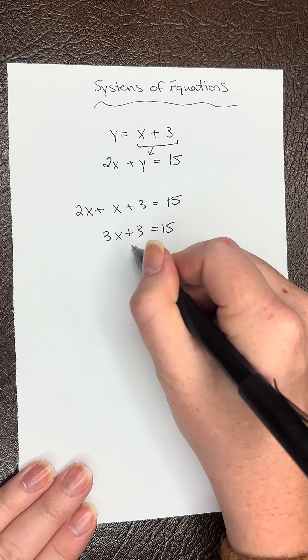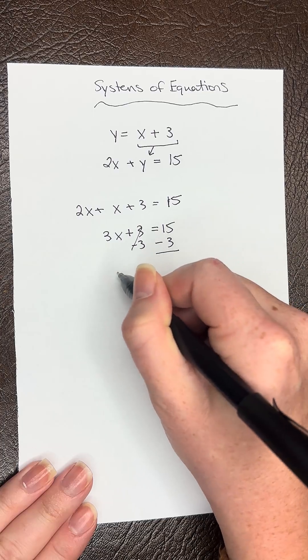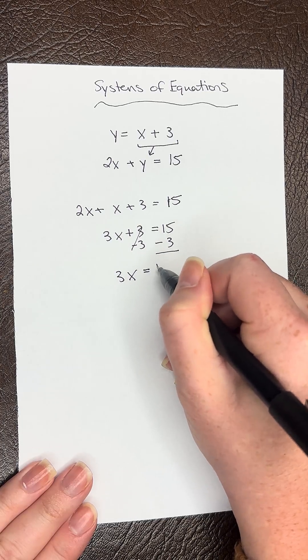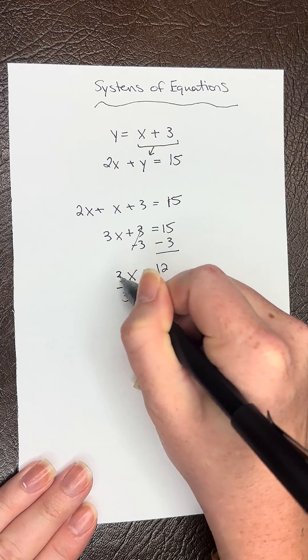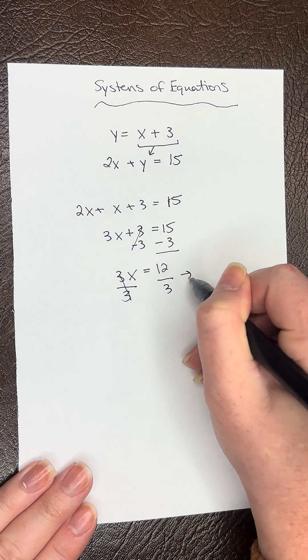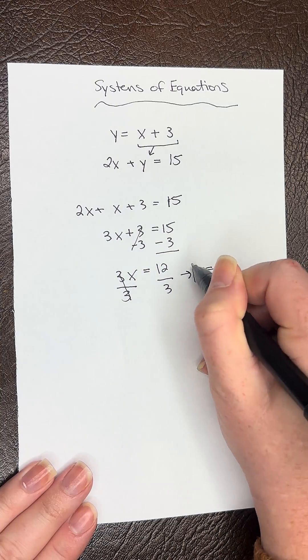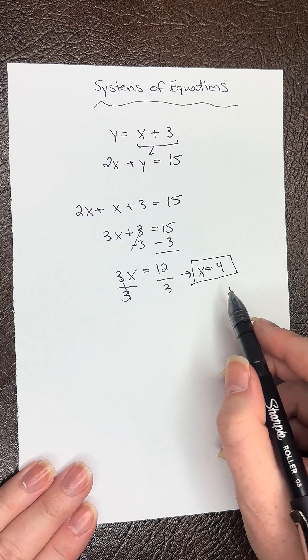Then we need to subtract 3 from both sides, and we're going to get 3x equals 12, divide by 3 on both sides, and we're going to get x equals 4. So that's our x.